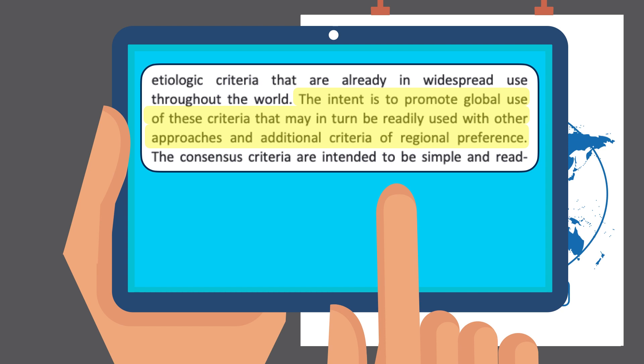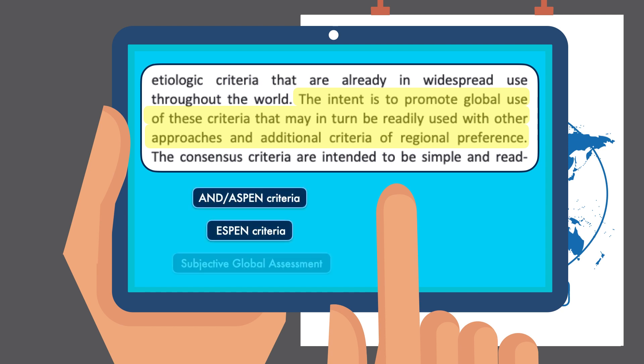They encouraged the adoption of the GLIM criteria in practice, but they aren't insisting that it totally replaces the Academy-ASPEN criteria, the ESPEN criteria, the Subjective Global Assessment, or whatever assessment or diagnostic tool that's already being used.